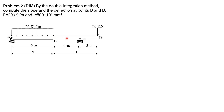First, let's compute the vertical reaction at A — horizontal is zero — and call the reaction at C as R sub C. Summation of moments about C: AY times 10 plus 30 times 3 minus 20 times 6 times 7 equals zero, giving AY equals 75 kN. Summation of moments about A: R sub C times 10 minus 20 times 6 times 3 minus 30 times 13 equals zero, giving R sub C equals 75 kN.